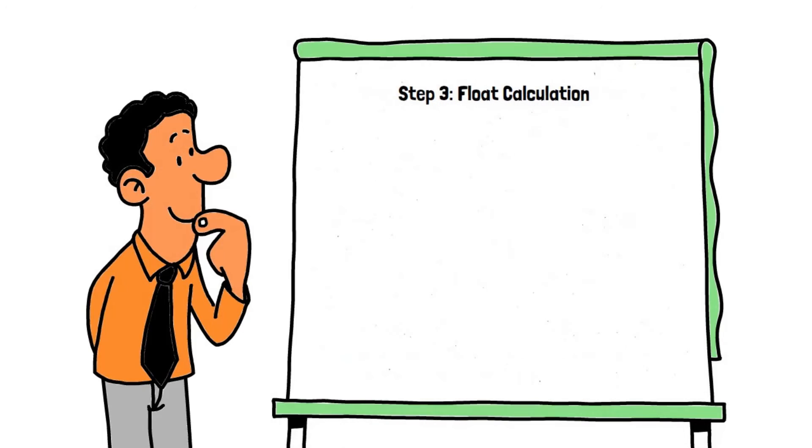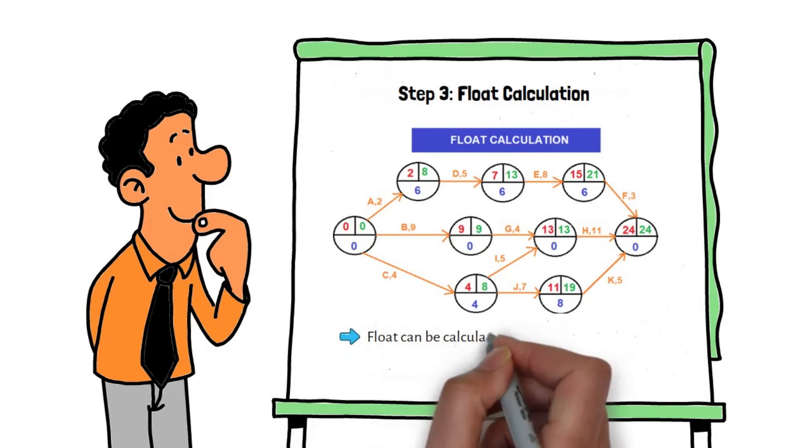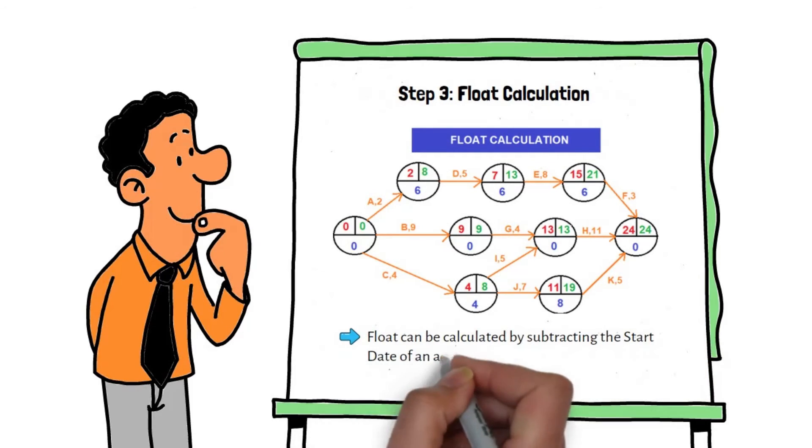Step 3: float calculation. Float can be calculated by subtracting the start date of an activity from its finish date.